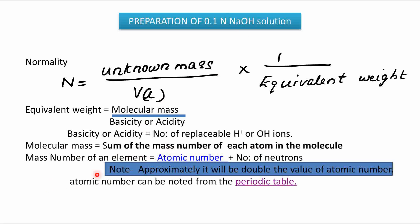It is better if we can memorize the mass numbers of some common elements. The equation to find mass number is: atomic number plus number of neutrons. A shortcut is that if we locate the atomic number from the periodic table, the mass number of that element will be approximately double the atomic number, though this is not always exact.